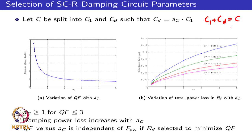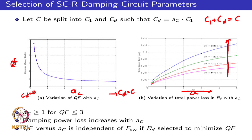If you take a value of AC equal to 0, what is plotted is AC versus the quality factor. AC equal to 0 corresponds to CD equal to 0, and AC tending to large values corresponds to CD equal to C. As CD becomes larger, the quality factor Qf comes down. But as AC increases, the power dissipation increases, and for a range of switching frequencies, the power dissipation increases with AC and also increases as the switching frequency reduces.